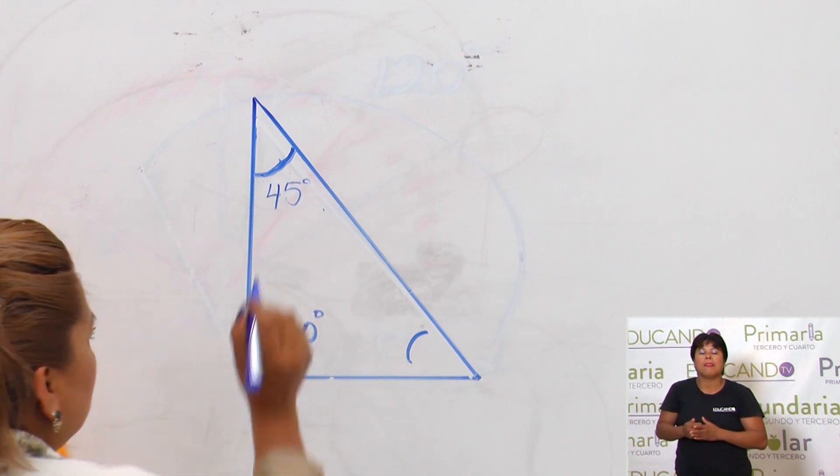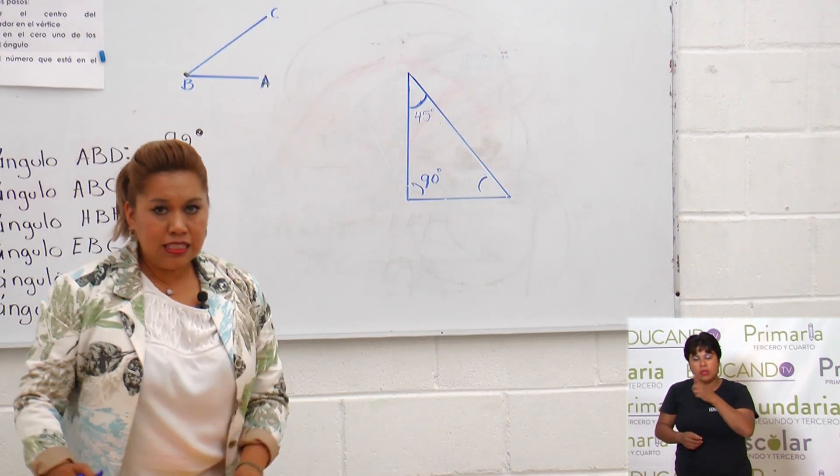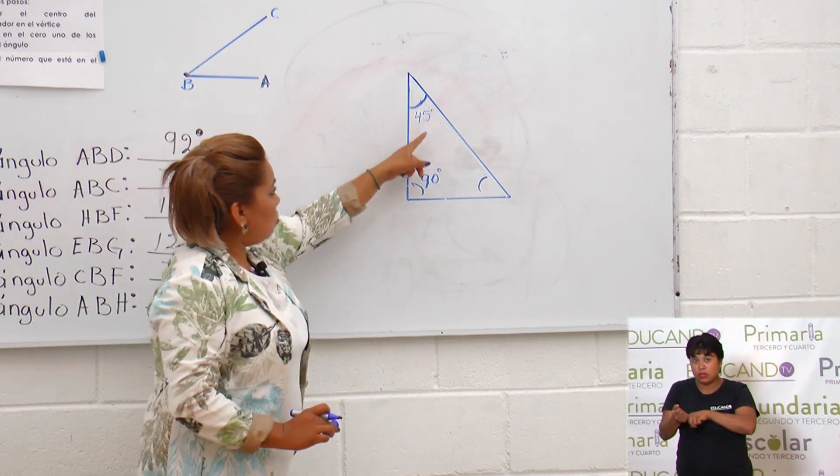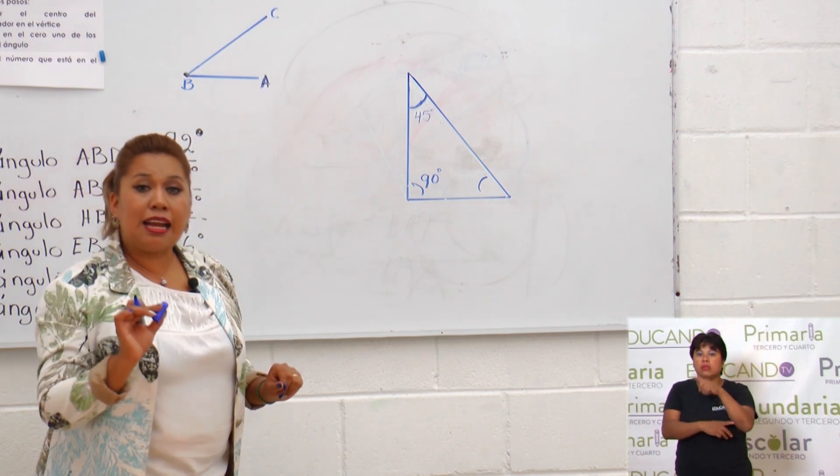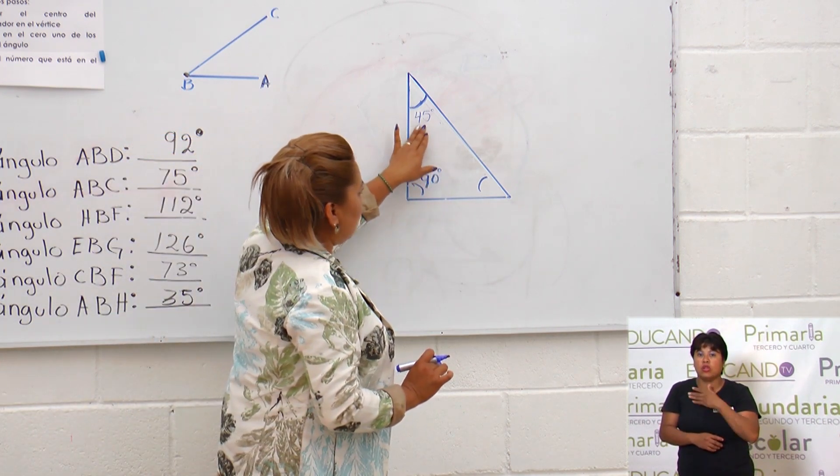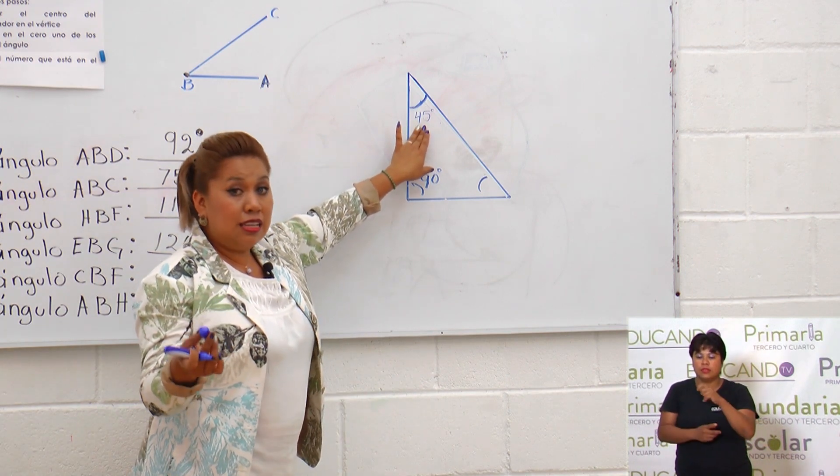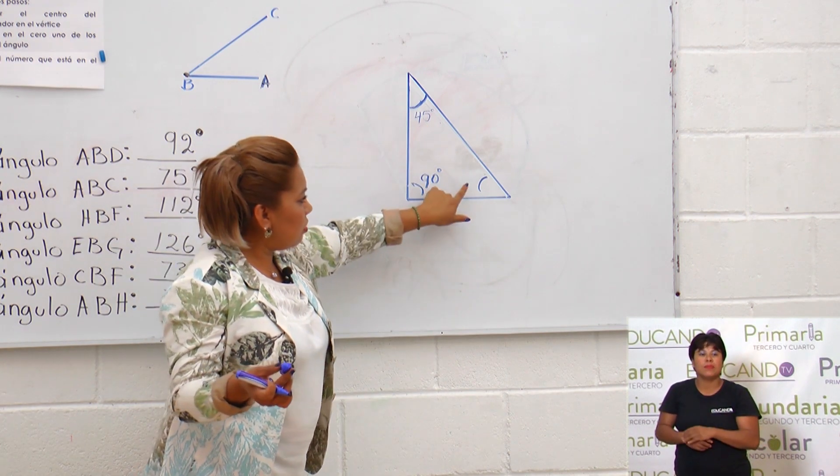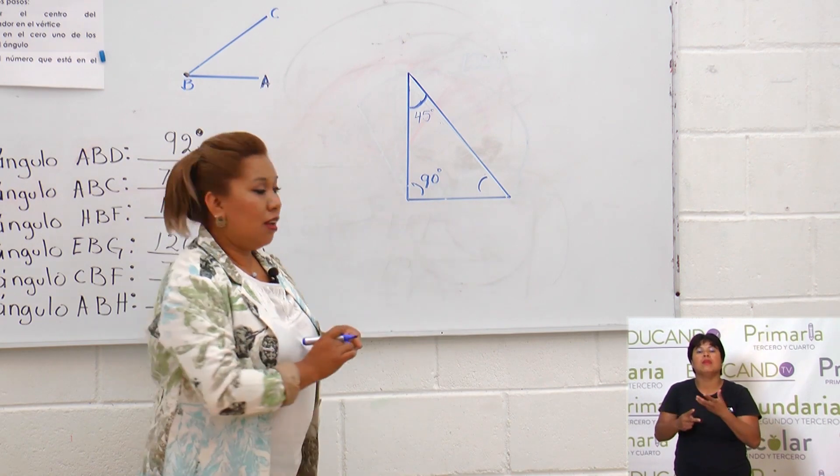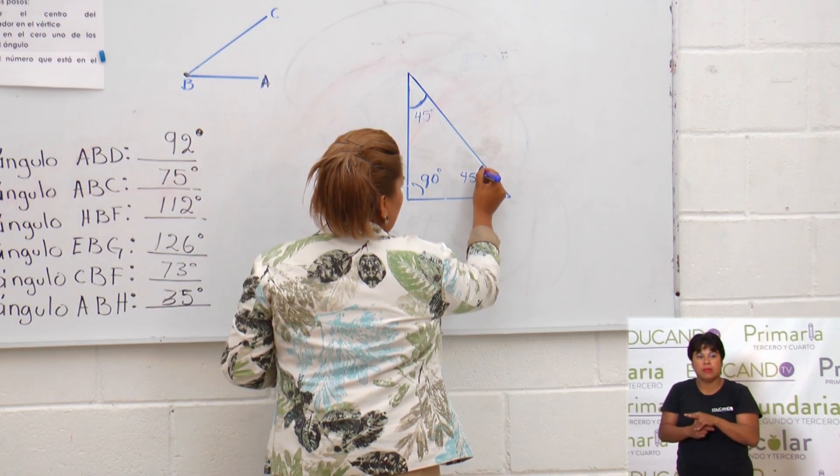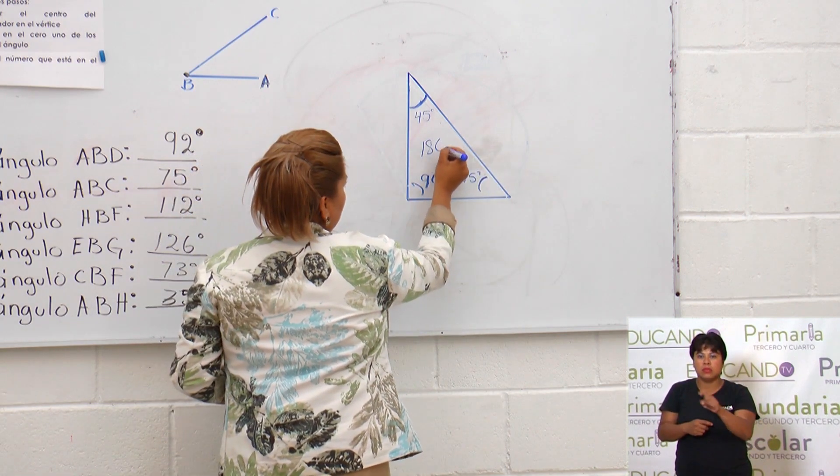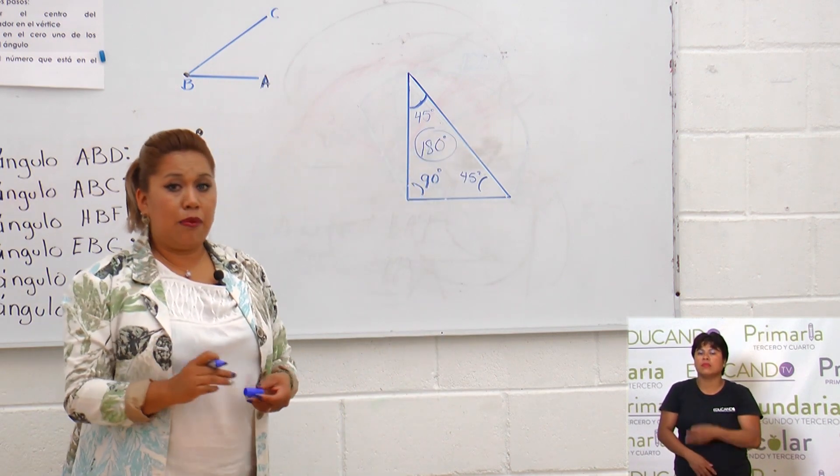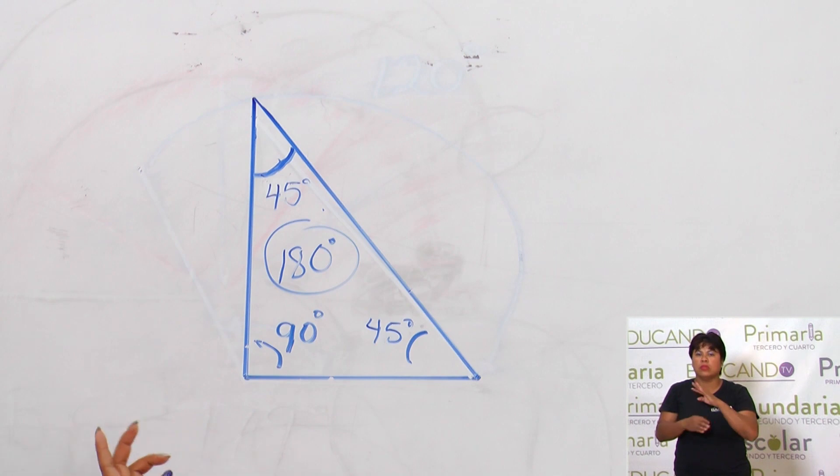Ahora bien, algo que me gustaría que tú supieras es que los ángulos internos de los triángulos en total deben de medir 180 grados. Por lo tanto, si ya tengo 90 más 45, sería 135, ¿verdad? ¿Cuánto entonces tendría este ángulo? Pues tendría 45 grados también, para que sumando todo nos dé un total de 180 grados. Y esa es una regla para los ángulos de todos los triángulos.